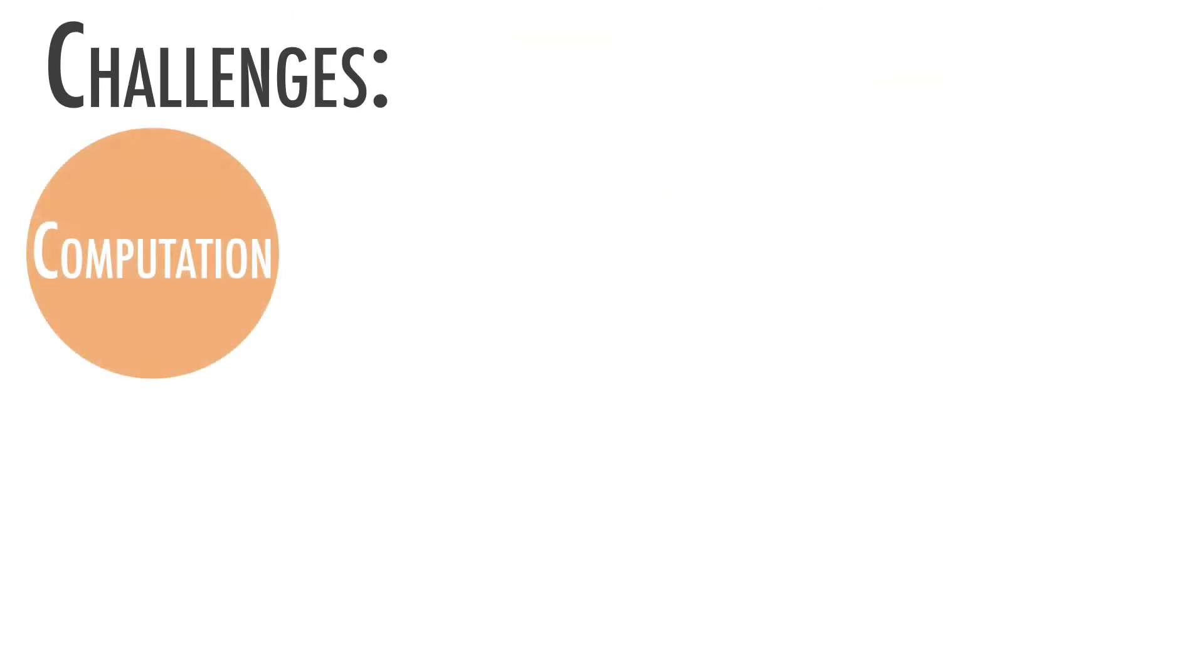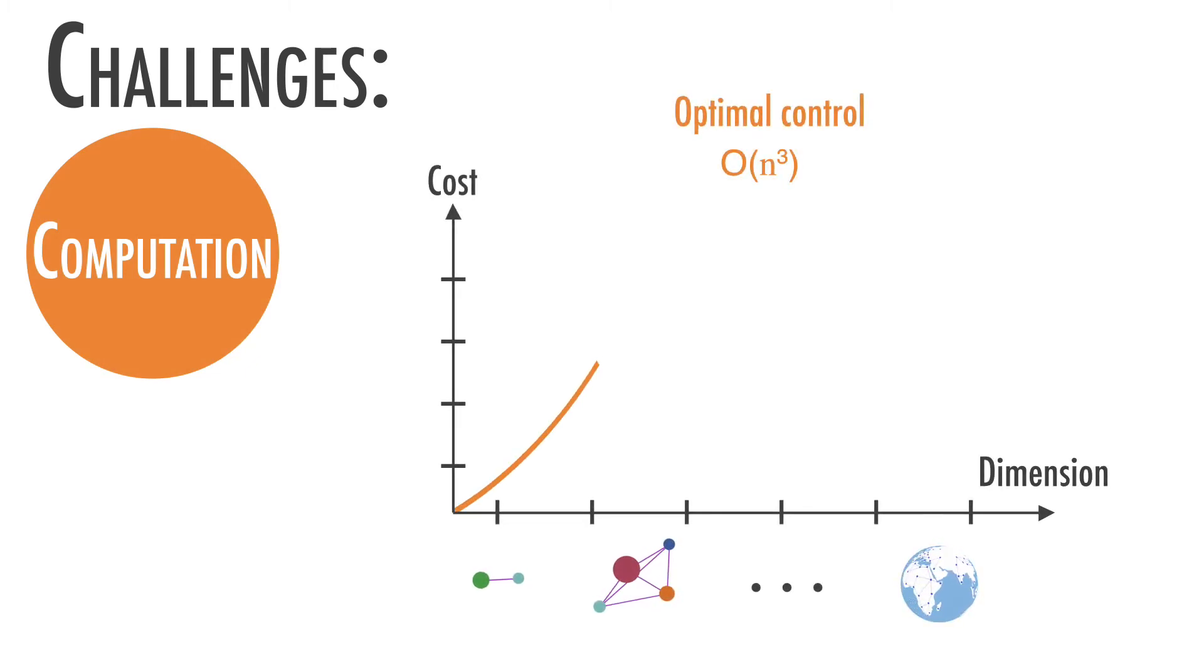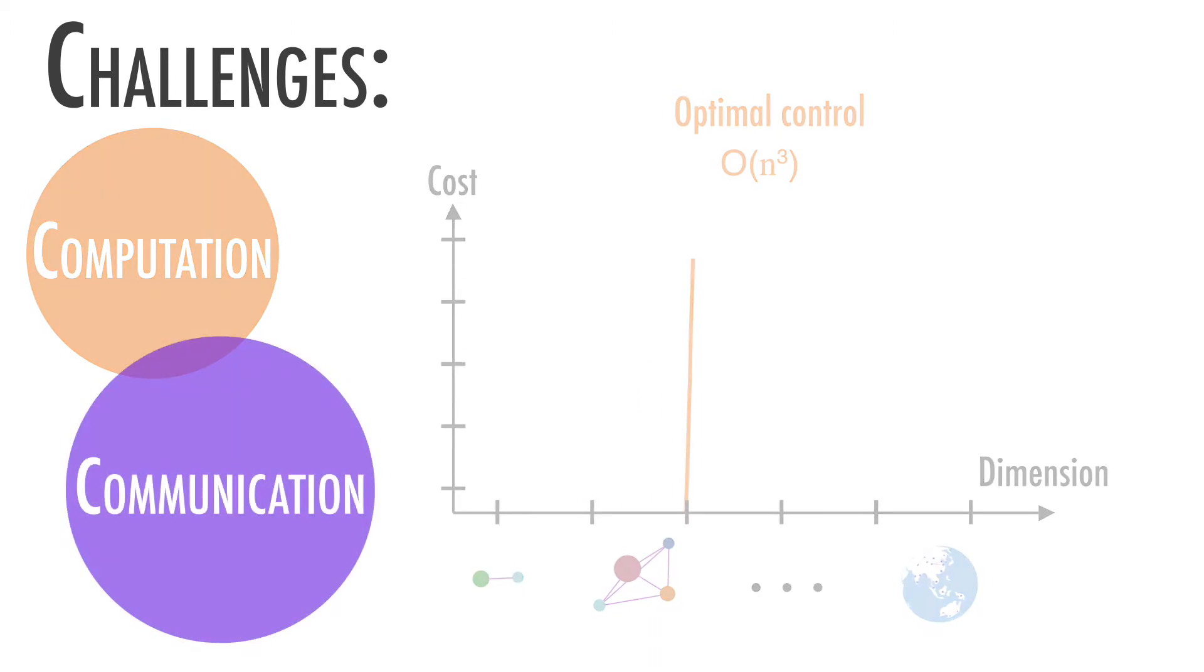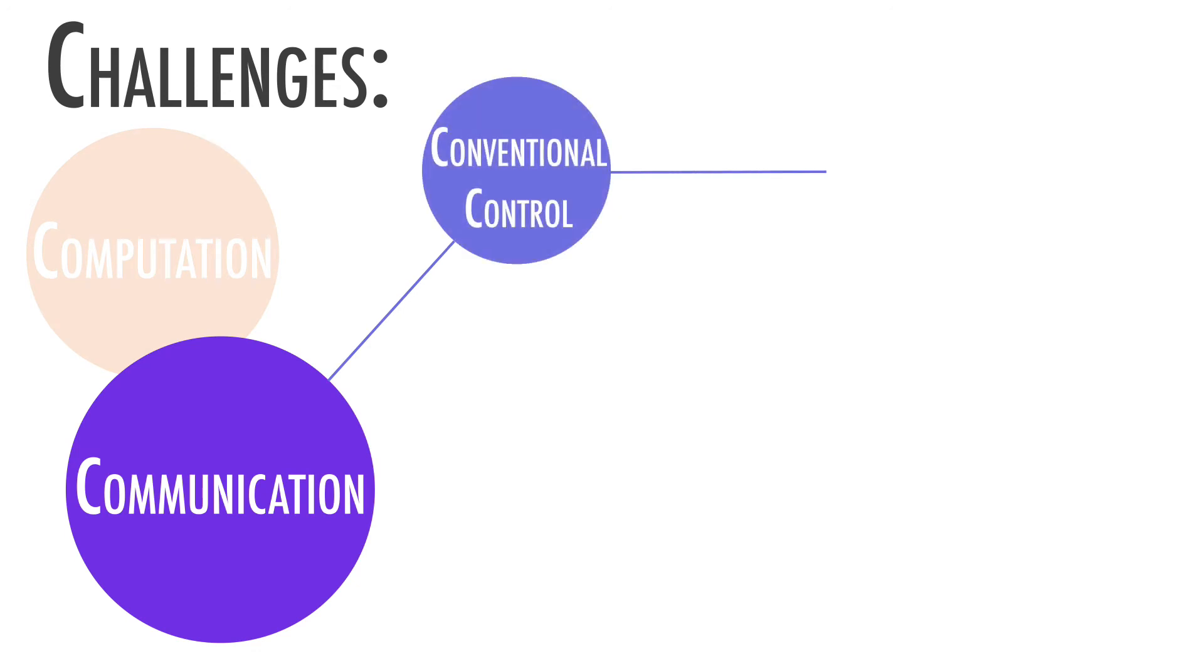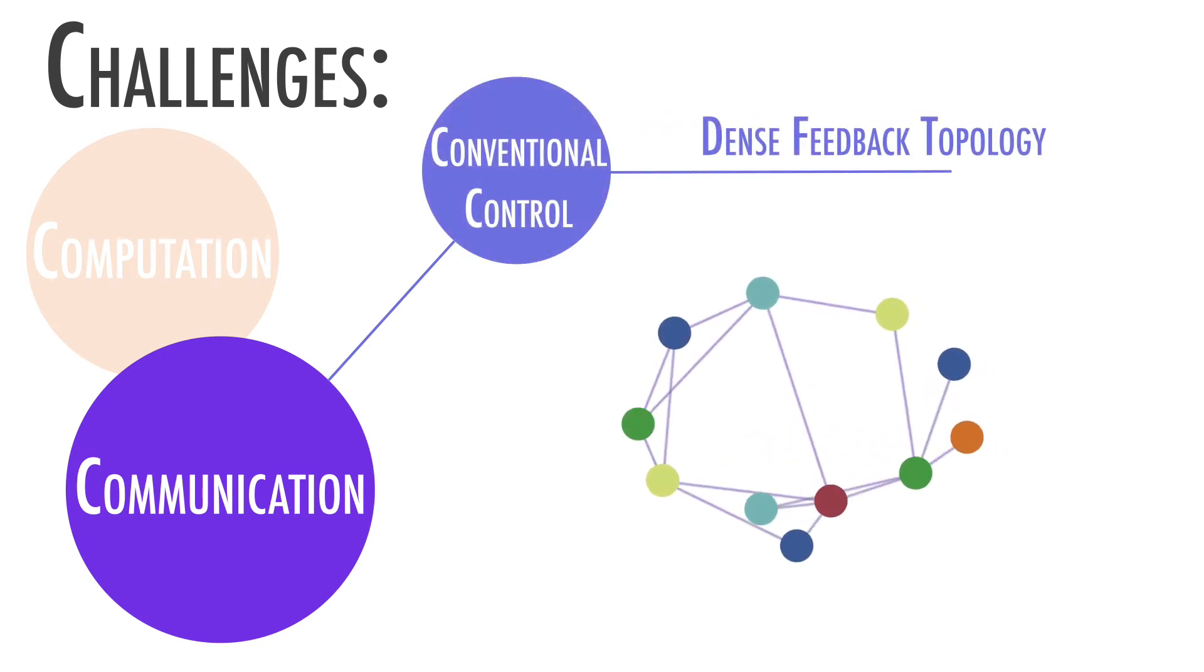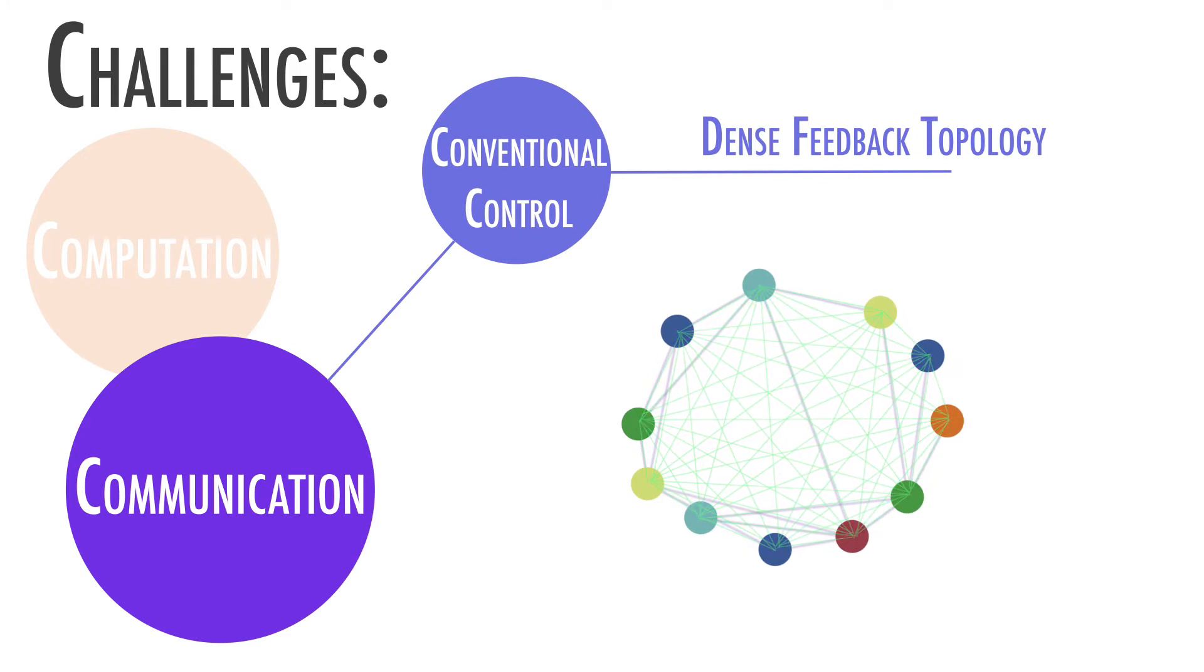The first challenge is computation. Computation costs of optimal controllers is proportional to the cube of the system dimension and can become intractable when the network size is huge. The second challenge is communication. Conventional control designs usually produce a dense feedback topology, which means that every node in the network must communicate with every other node in real-time. This can lead to data flooding.